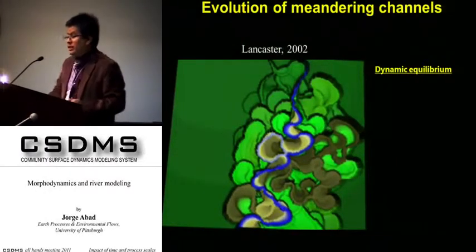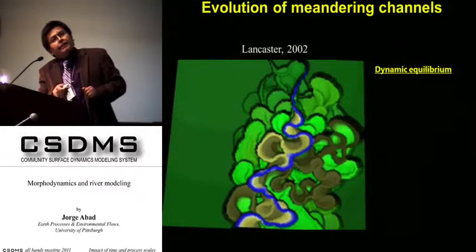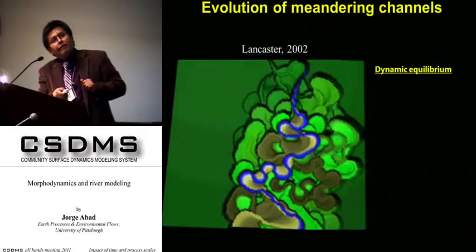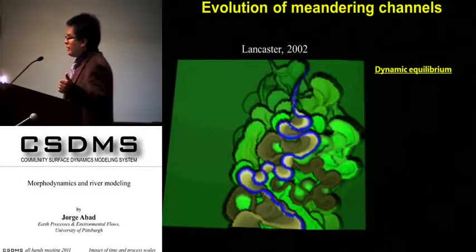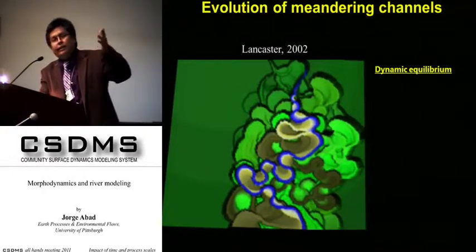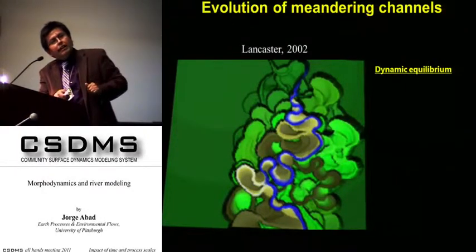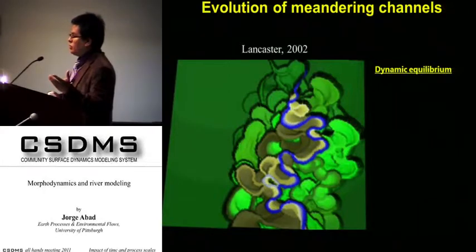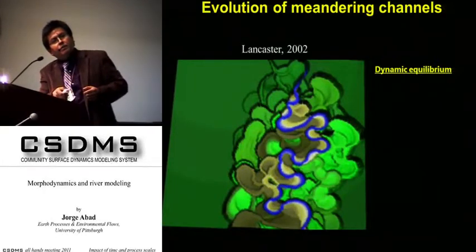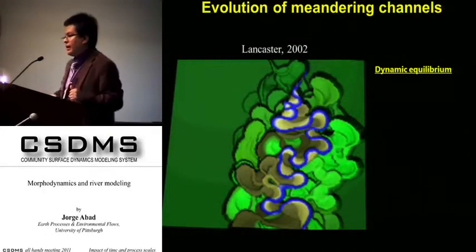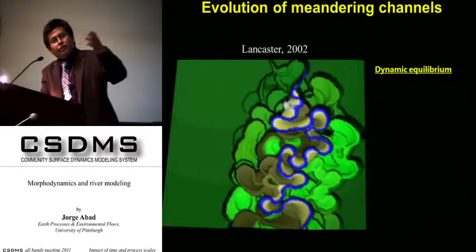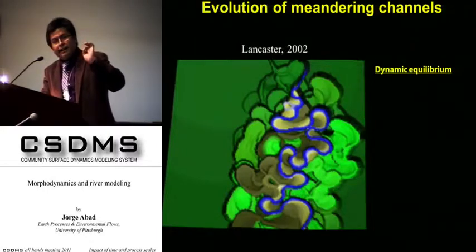I have to show this visualization — one of the best that I have seen — just to illustrate how a meandering channel evolves. You have a flat plane, and then you have a single thread channel that migrates. Depending on the morphodynamic and hydrodynamic conditions, it will migrate over hundreds or thousands of years. What is interesting is that meandering channels migrate and then have to cut themselves — cutoffs happen in order to maintain a kind of dynamic equilibrium. If there is no change in tectonics or geological settings, this river will try to reach a dynamic equilibrium condition.